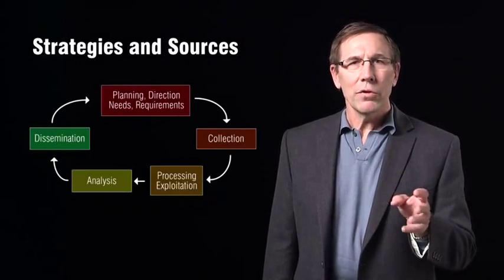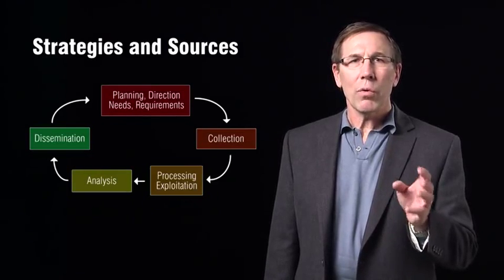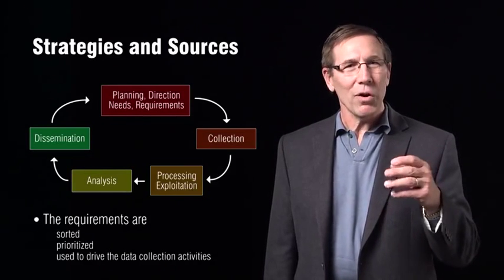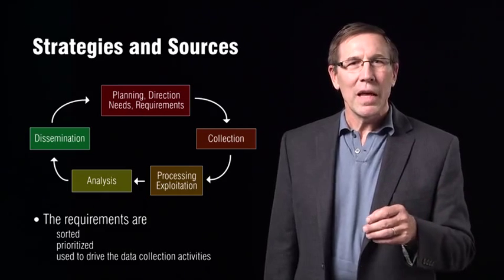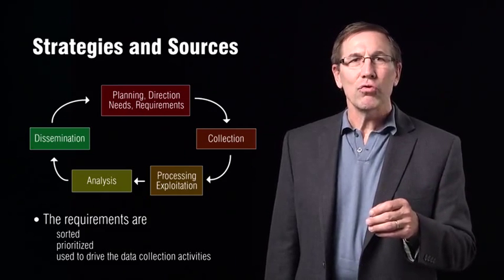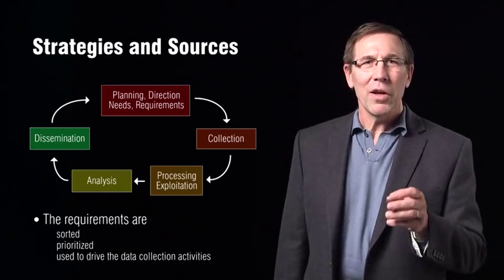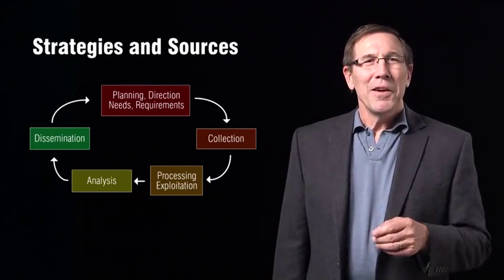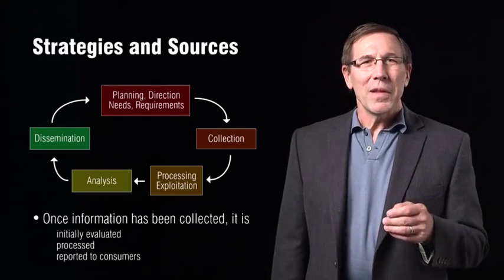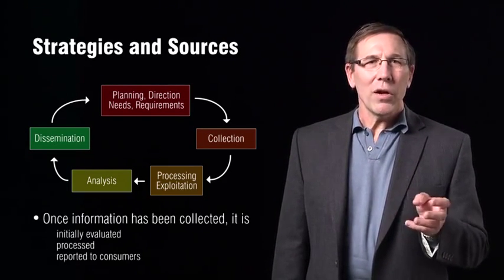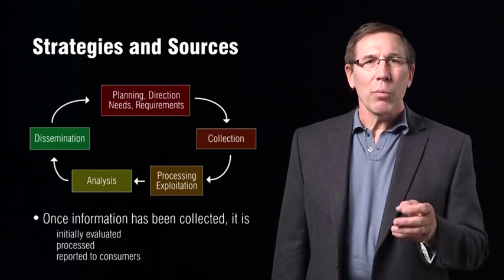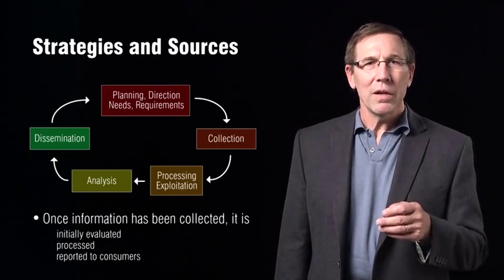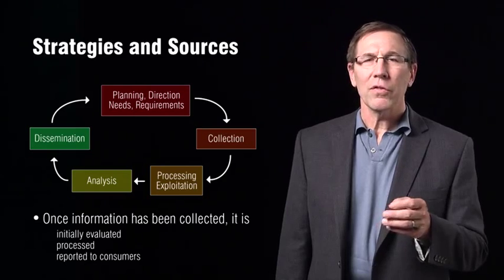The intelligence cycle depicted here starts with requirements. The requirements are sorted and prioritized, and then used to drive the requirement activities of the members of the broader intelligence community. Once the information has been collected, it is initially evaluated and processed, and reported to the consumers. The cycle is then repeated until the intelligence requirement is fully satisfied.